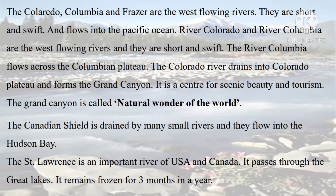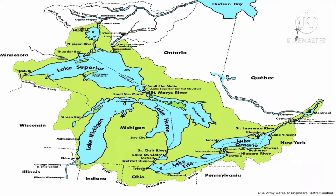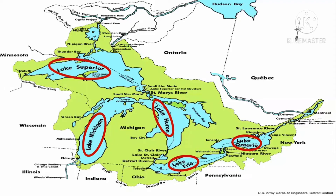The Grand Canyon is a center for scenic beauty and tourism and is called a natural wonder of the world. North America has a large number of fresh water and salt water lakes situated on the southern border of the Canadian Shield. Huron, Ontario, Michigan, Erie, and Superior are the important lakes, together called the Great Lakes. Lake Superior is the largest of the Great Lakes and the largest fresh water lake in the world. Chicago and Detroit are situated on the Michigan and Erie lakes respectively. In Canada, Lake Winnipeg is very important.